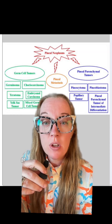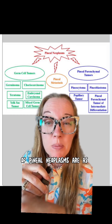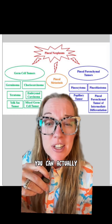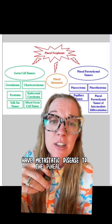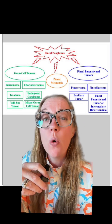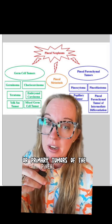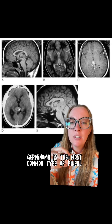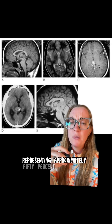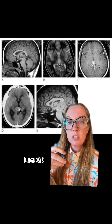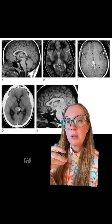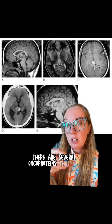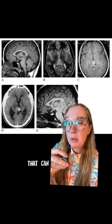The differential diagnosis of pineal neoplasms includes germ cell tumors, metastatic disease to the pineal gland, and primary tumors of the pineal gland. Germinoma is the most common type of pineal neoplasm, representing approximately 50% of cases. Diagnosis of this type of tumor can be assisted with CSF and serum markers — there are several oncoproteins that are excreted and can be drawn for.